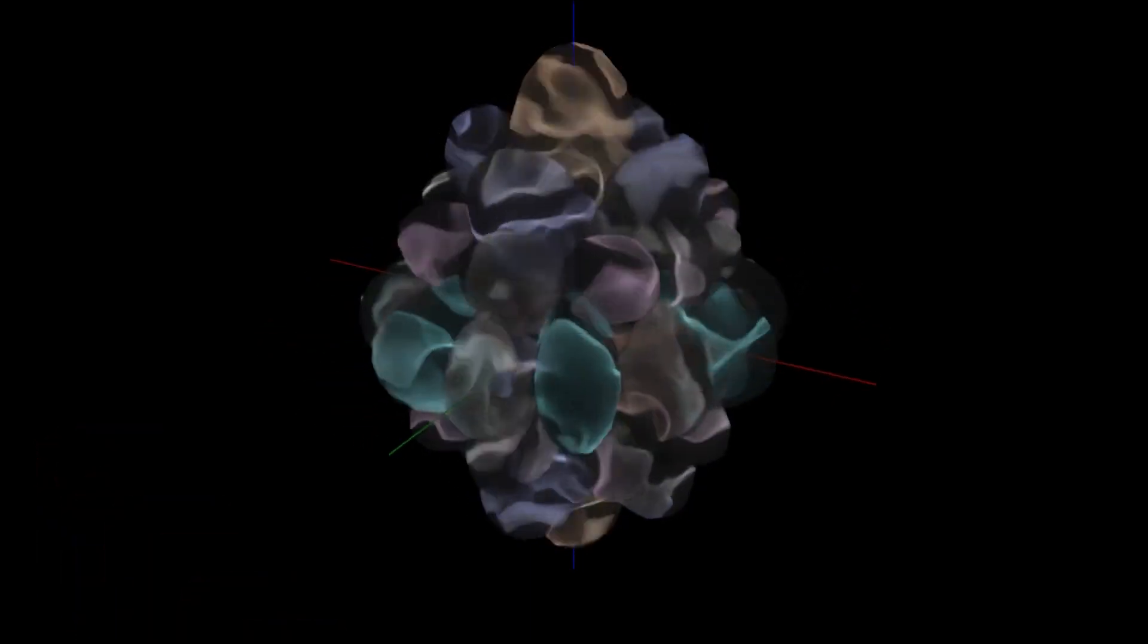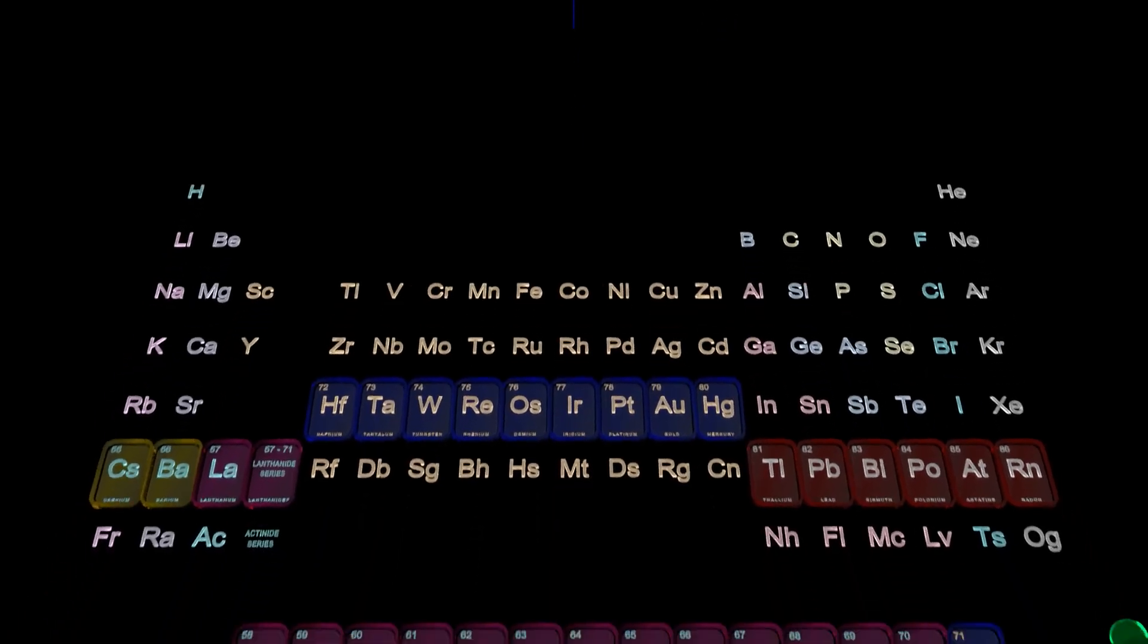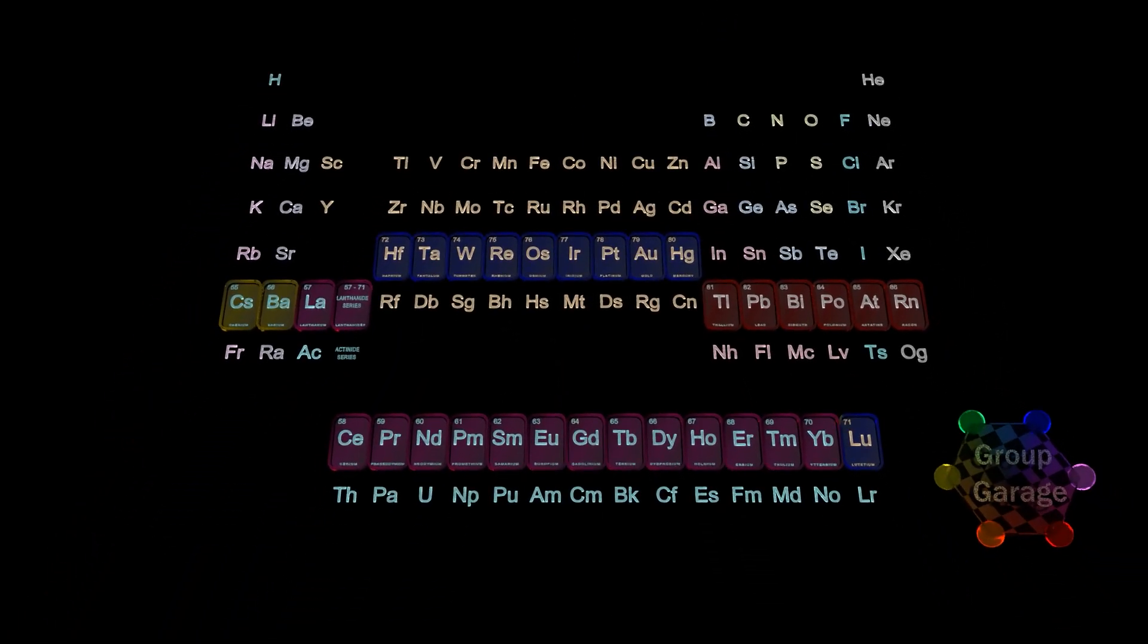And remember, we're filling the principal energy level n equals 4, so now the fourth shell is full. Lutetium, this final lanthanide element will backfill the 5d1 orbital.